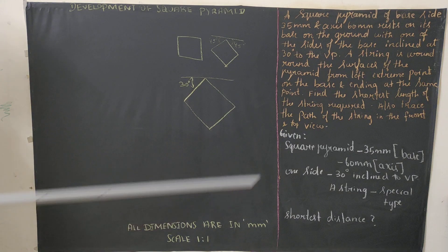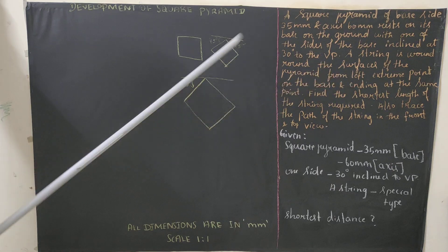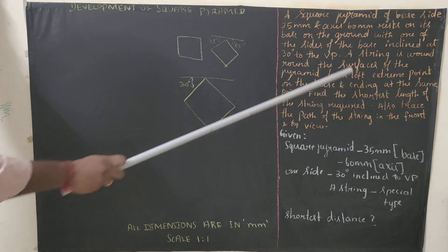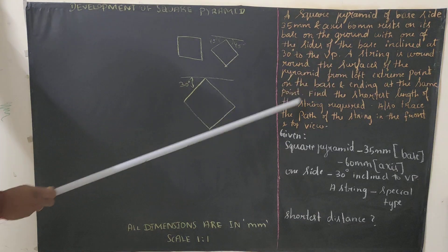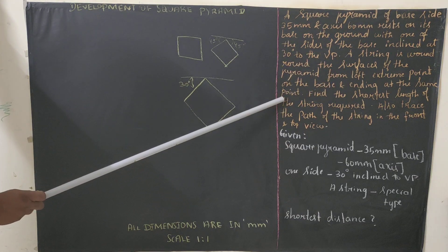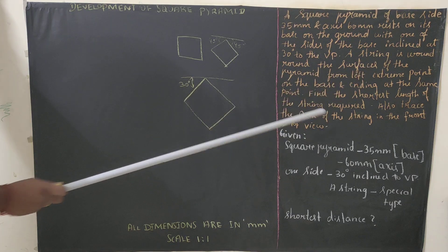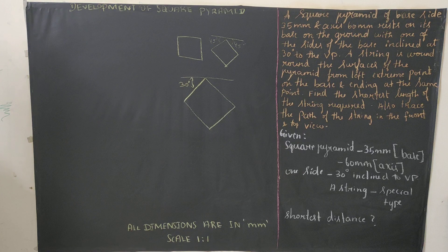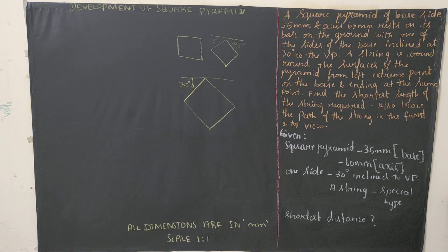The string is wound around the surface of the pyramid from the left extreme point on the base, ending at the same point. Find the shortest length of the string required and also trace the path of the string in the front and top view. Now we'll start by drawing the base diagram in HP.